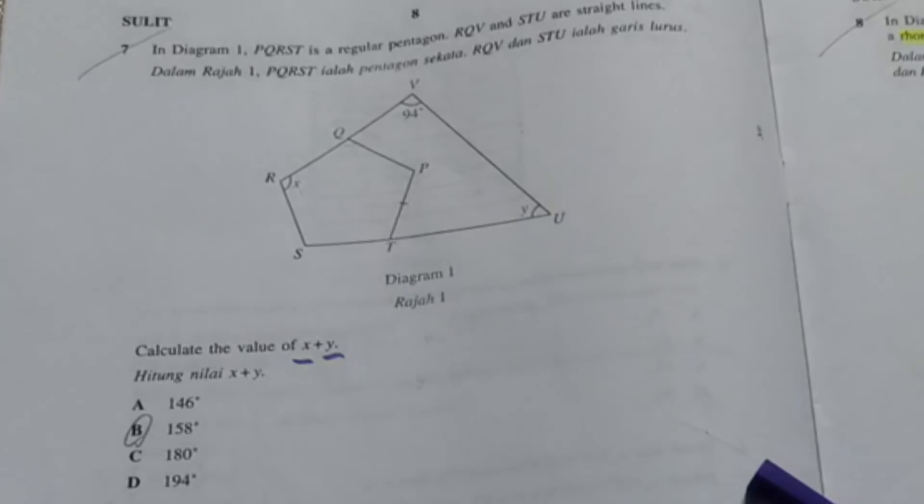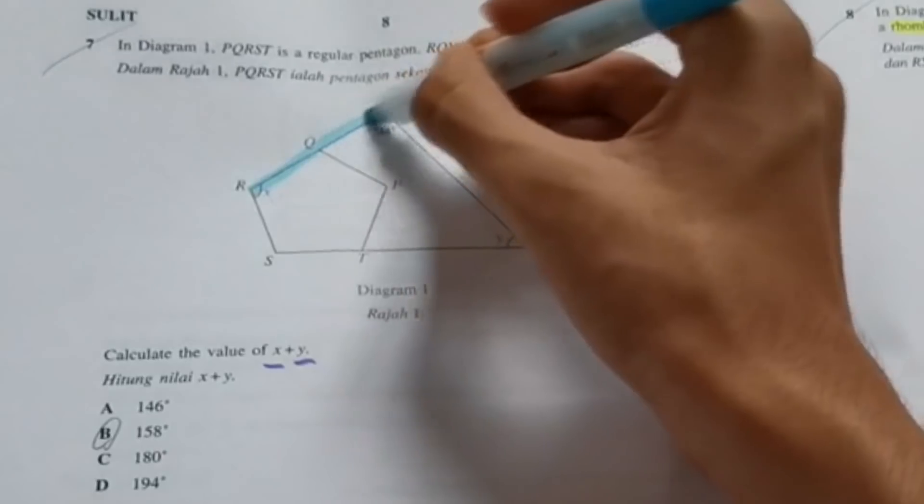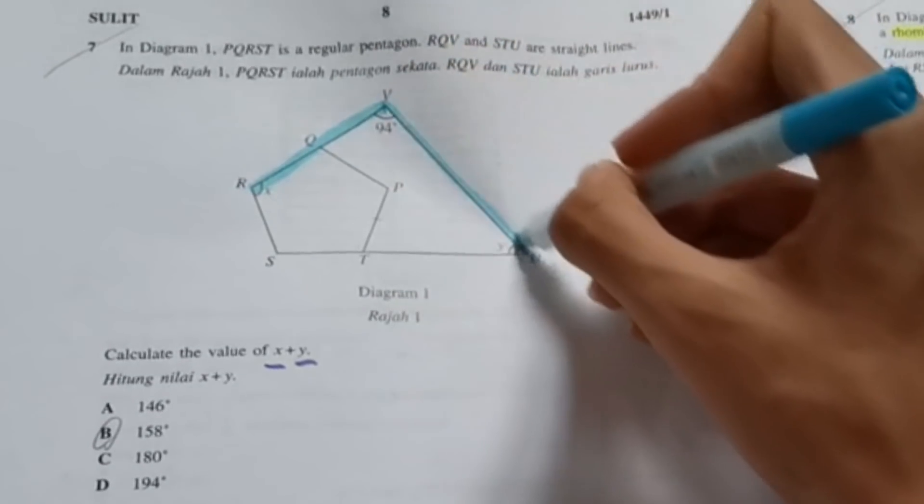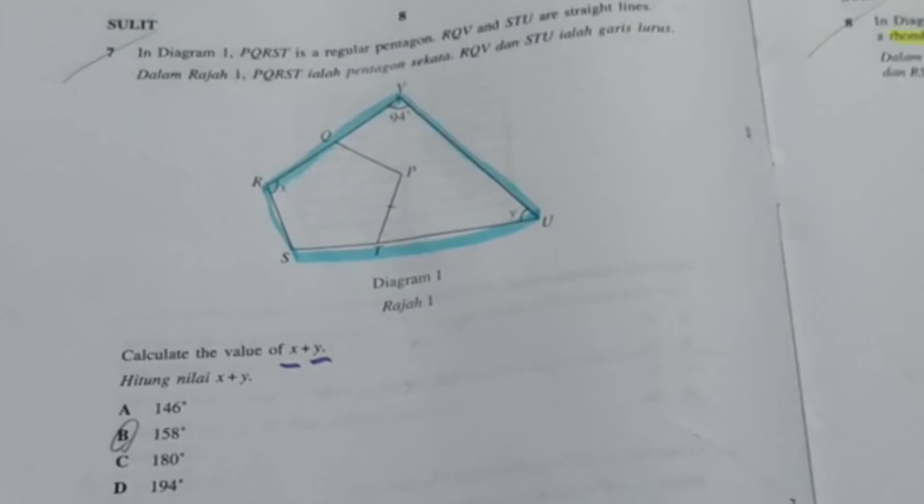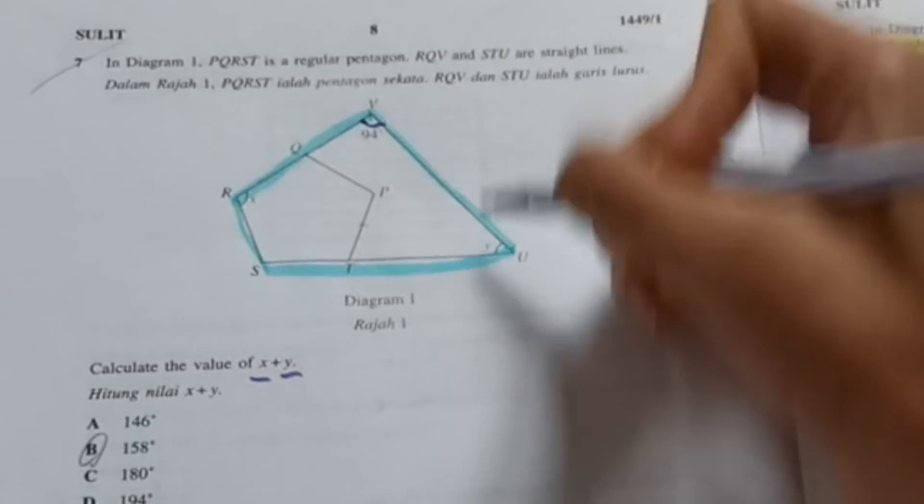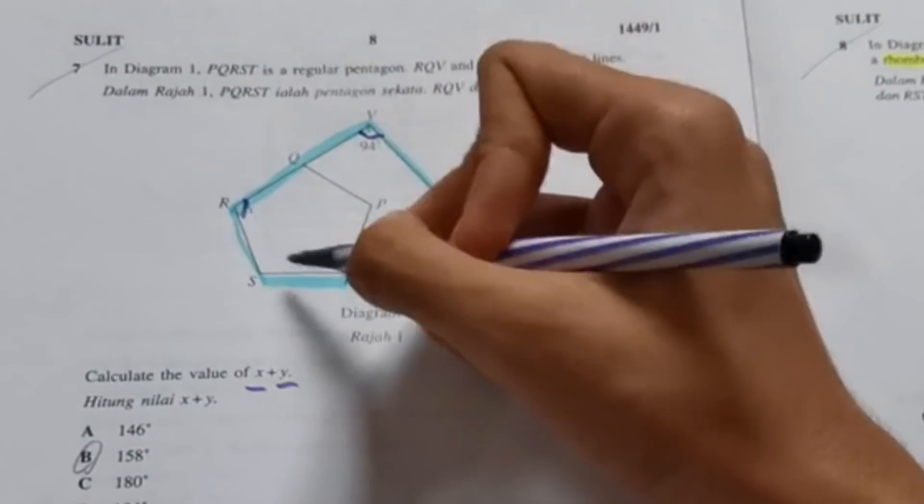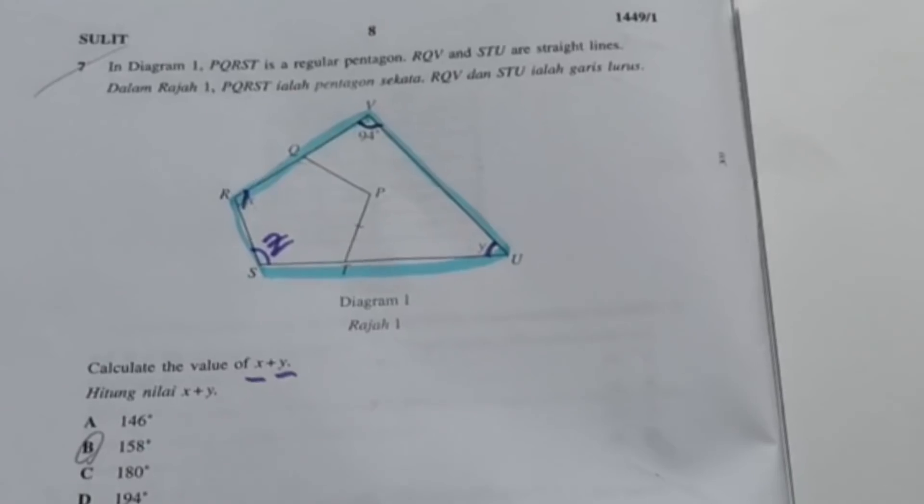When I erase everything and look at the bigger picture, it's actually just the quadrilateral with three angles missing. This is a quadrilateral because there are four sides, and the four angles are 94, y, x and I'm gonna call this z.